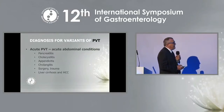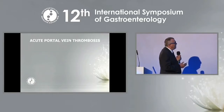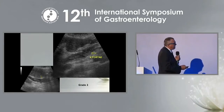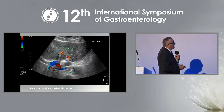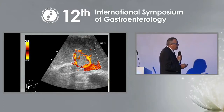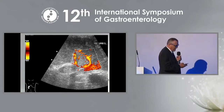Acute portal vein thrombosis is very often associated with inflammatory conditions such as pancreatitis and cholecystitis. Here you can see acute portal vein thrombosis where the portal vein is thrombosed — this is Grade 2. In another picture, the left branch of the portal vein is thrombosed due to rectal cancer and liver metastases. In cases of portal vein thrombosis, only arterial blood flow is seen going around the thrombus, meaning the liver is supported only by arterial blood flow.